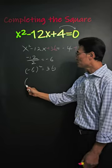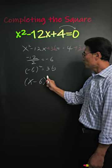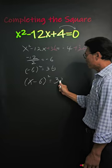If we factor the left side, we get x minus 6 squared. On the right side, we have 32.